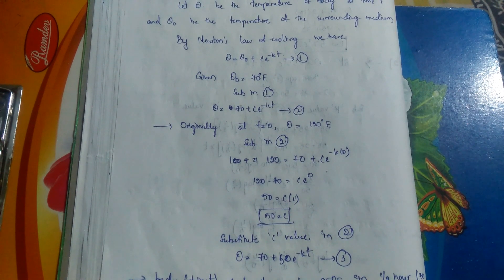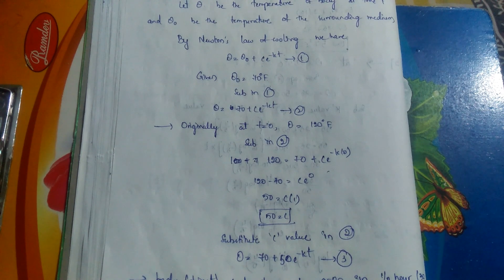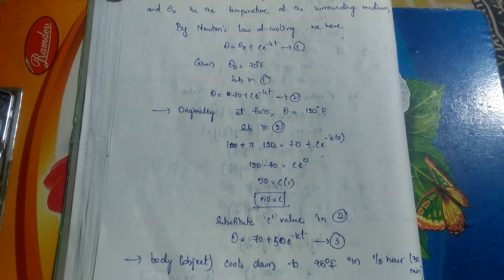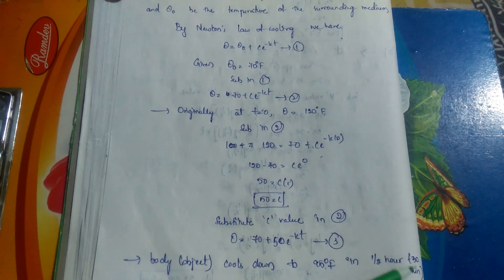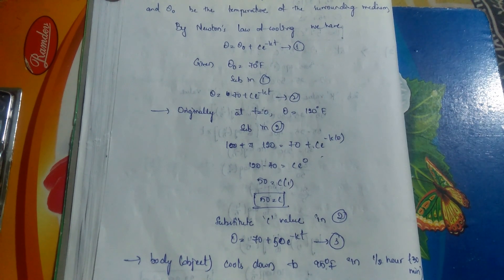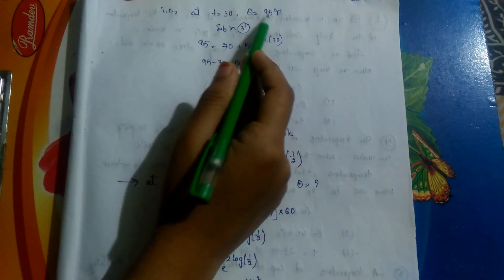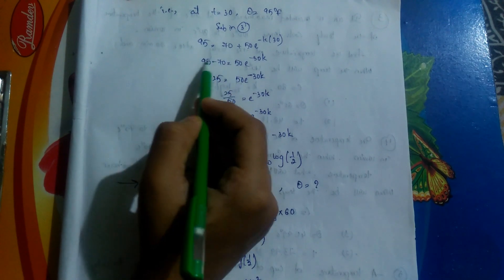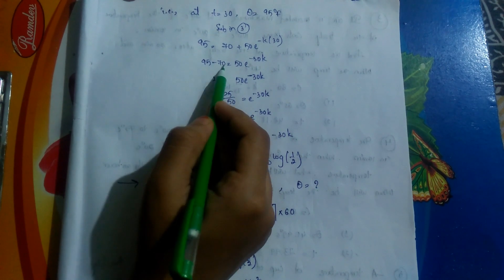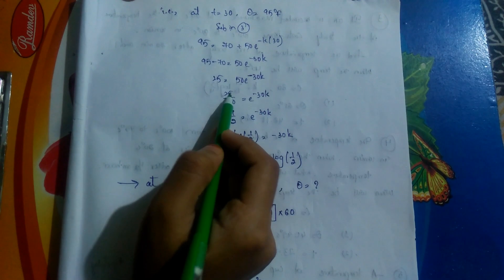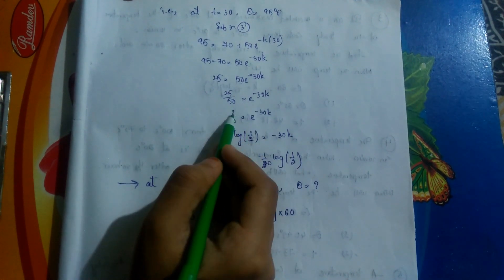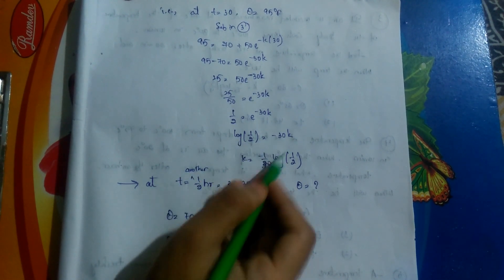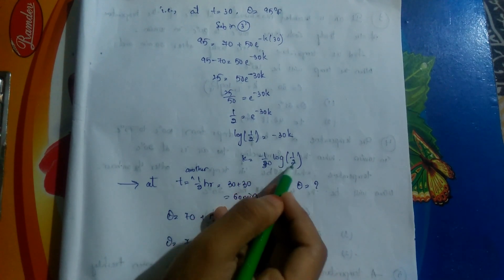Second condition: the object cools to 95°F in 30 minutes, so at T = 30, θ = 95°F. Substituting into equation 3: 95 = 70 + 50·e^(−30k), giving 25 = 50·e^(−30k), so 1/2 = e^(−30k). Removing the exponential: log(1/2) = −30k, giving k = −(1/30)·log(1/2).